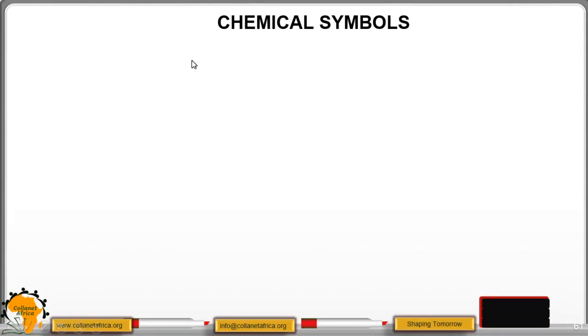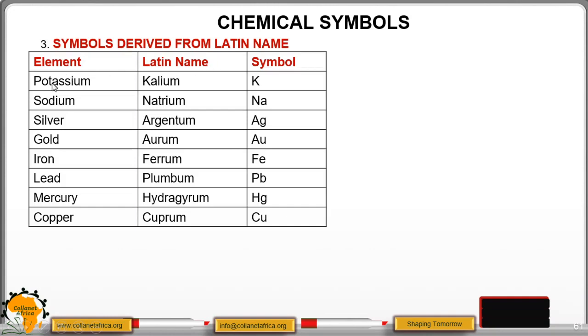Symbols derived from Latin name. Potassium, known as kalium in Latin, so the symbol is K, derived from the Latin name. Sodium, natrium, Na. Silver, argentum, Ag. Gold, aurum, Au. All these are derived from the Latin name. Iron, ferrum, Fe. Lead, plumbum, Pb. Mercury, hydrargyrum, Hg. Copper, cuprum, Cu.